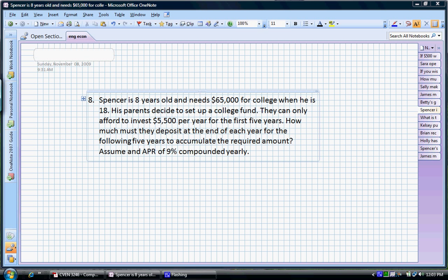So it's a pretty realistic problem. His parents decide to set up a college fund. And they know right now they can invest $5,500 every year for the first five years. But what they want to know is how much do they need to deposit at the end of each year for the following five years to accumulate the required amount. And the account that they are using right now has an interest rate of 9%, which is pretty good.